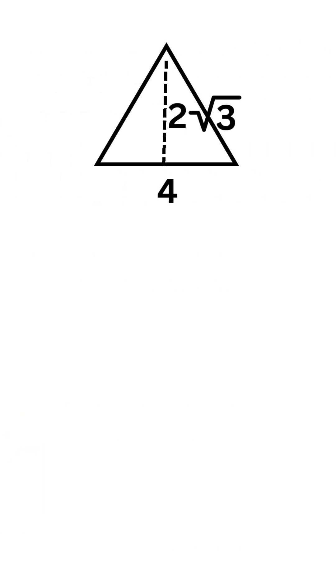So let's find the area of the triangle. We know area is equal to one half base times height. So the area of one of the equilateral triangles would be 4 root 3.